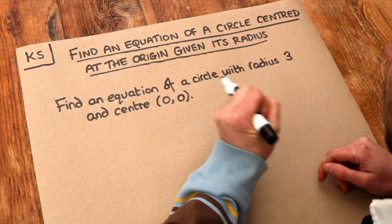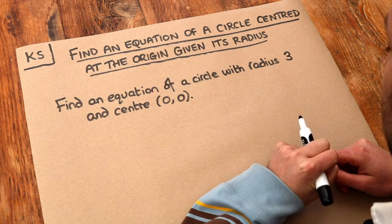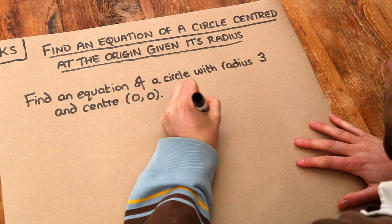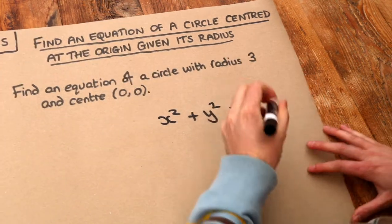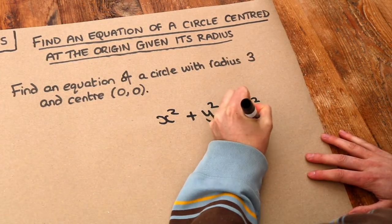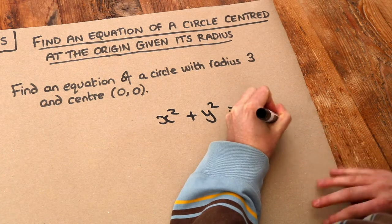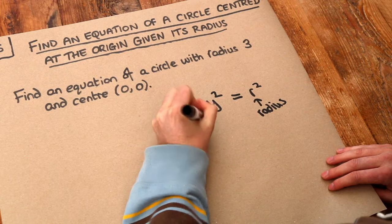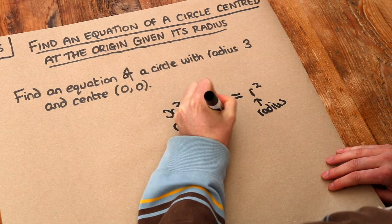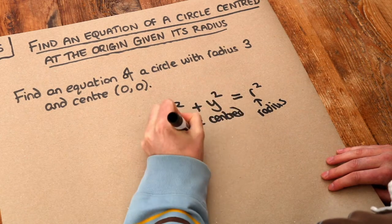There's just one key equation you need to remember that applies for circles: x² + y² = r². Let me explain the parts of this. The r here is the radius of the circle, and this formula only applies if the circle is centered at the origin, at (0,0).